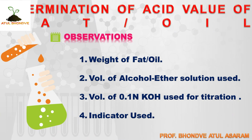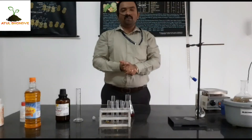The observation table is in front of you. The important observations for the determination of acid value are: weight of oil — 10 g; volume of alcohol-ether solution added — 50 ml; indicator used — phenolphthalein indicator; and volume of potassium hydroxide solution required for titration — 1.1 ml.